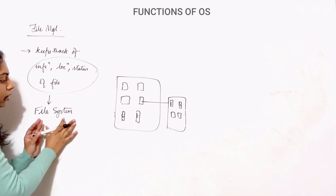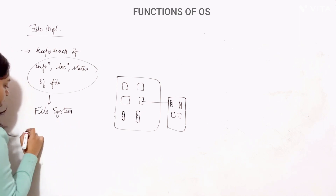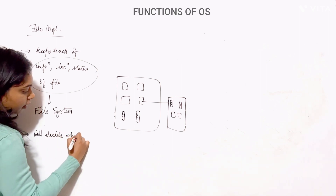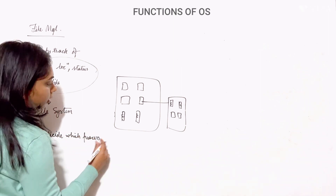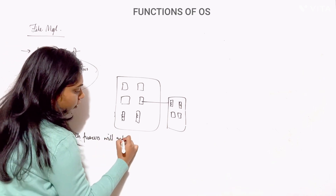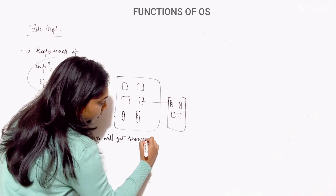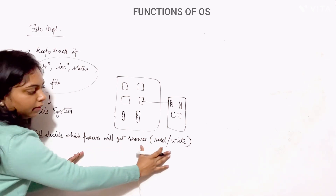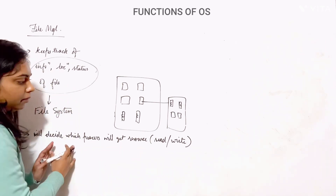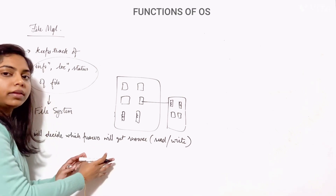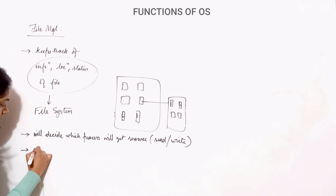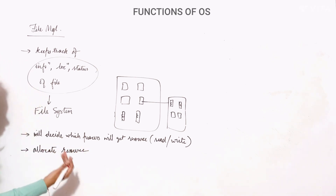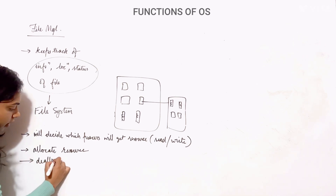The OS will decide which process will get read or write access to a file. In case of multi-programming, OS decides which process gets read or write access. It then allocates that access (read or write) to the file, and if a program has been terminated, it will deallocate those resources. These are the functions of OS in case of file management.